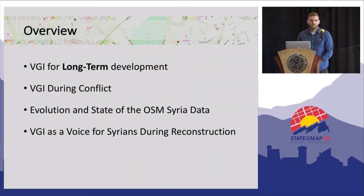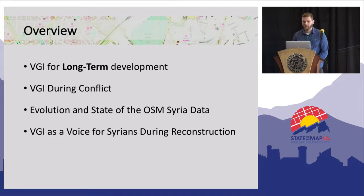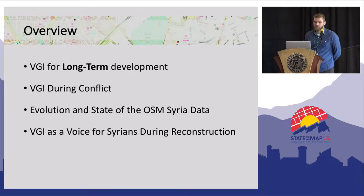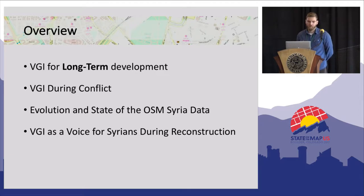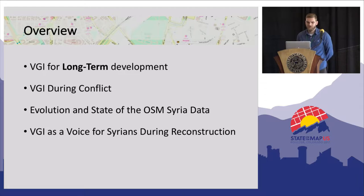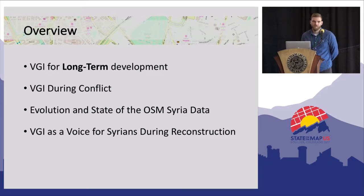We've seen a lot of examples over the years where OSM and volunteer geographic information technologies have been used to help with short-term emergency response scenarios. But in this presentation, the goal is to think about how to leverage these technologies for longer-term development projects, including reconstruction in Syria. We'll look at how Syrians already used VGI technology during the conflict, the current state of OSM data over Syria, and how VGI can help with reconstruction and what is needed to get Syrians more involved in mapping for their own reconstruction.